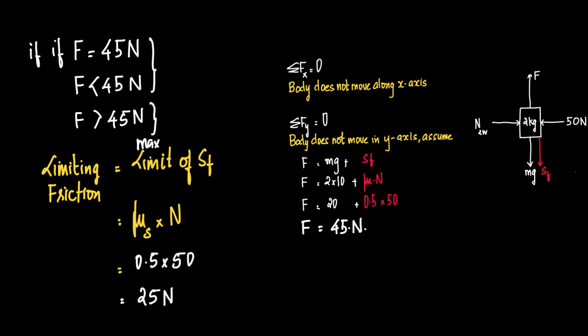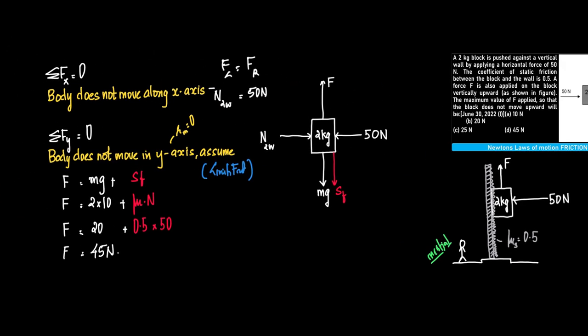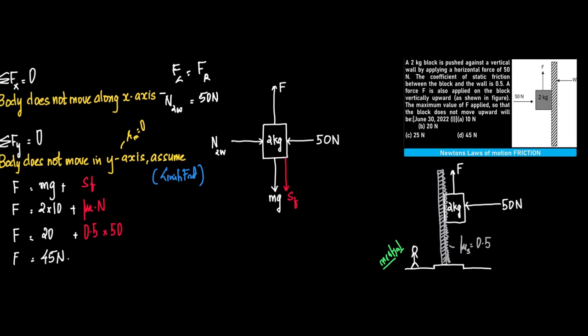Now we need to keep this in mind that if F is greater than 45 Newton, what will happen? The body will start to move. When F equals 45 Newton, the body is at rest. Also when F is less than 45 Newton, the body is at rest. Therefore we should actually be telling this answer as F is less than or equal to 45 Newton. Since the maximum value is being asked, we can say that the value is 45 Newton. I hope you're able to get the concept here.